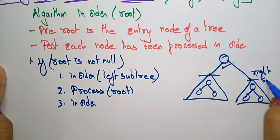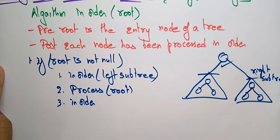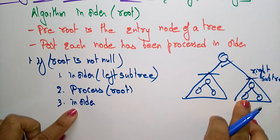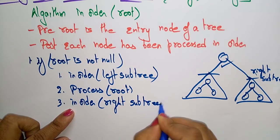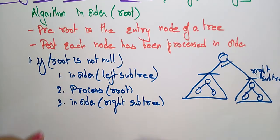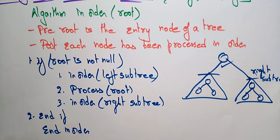In the right subtree, if only one node is present you can process it directly. If there is again a tree in the right subtree, you follow the in-order technique again recursively. So the in-order sequence is: first visit left, then root, then right. This is the algorithm for in-order binary tree traversal.